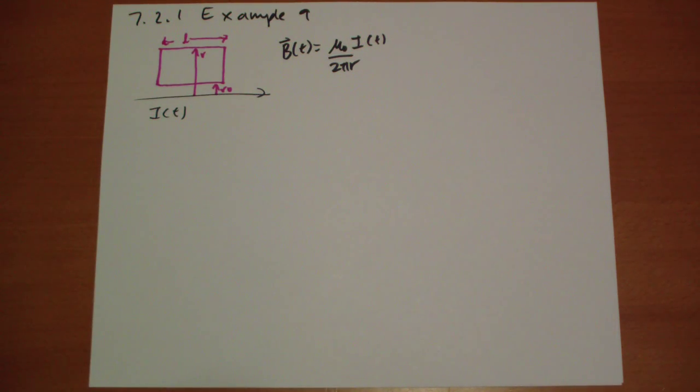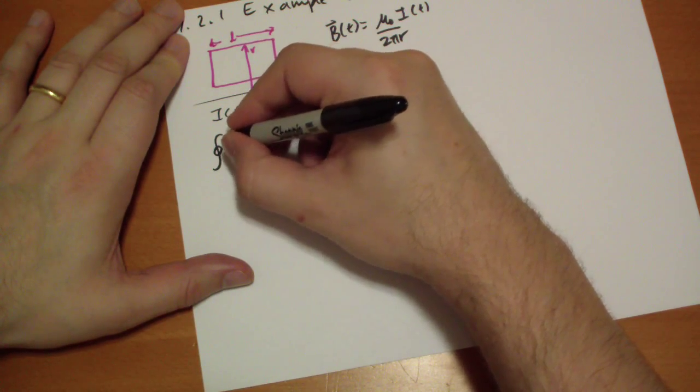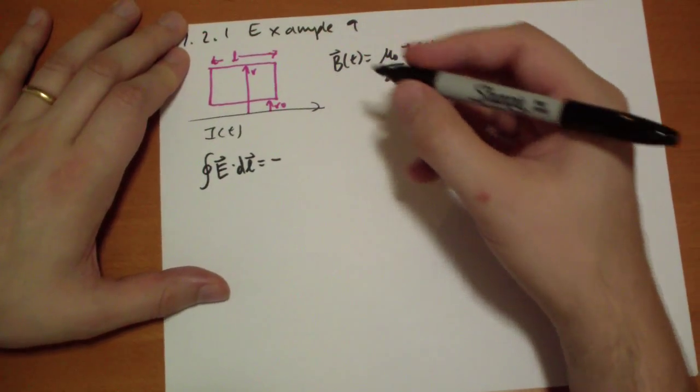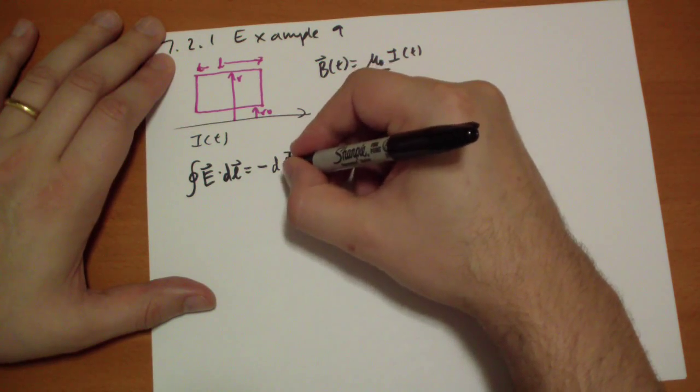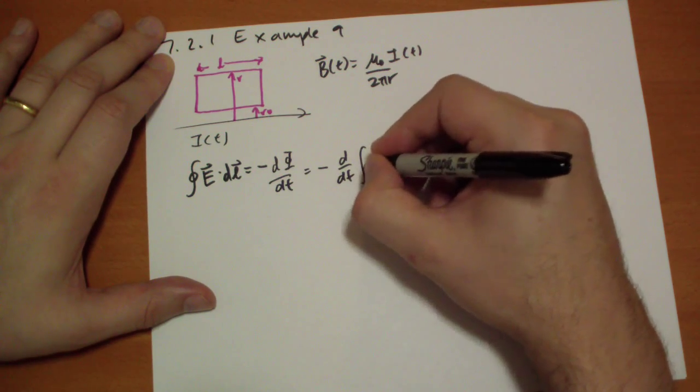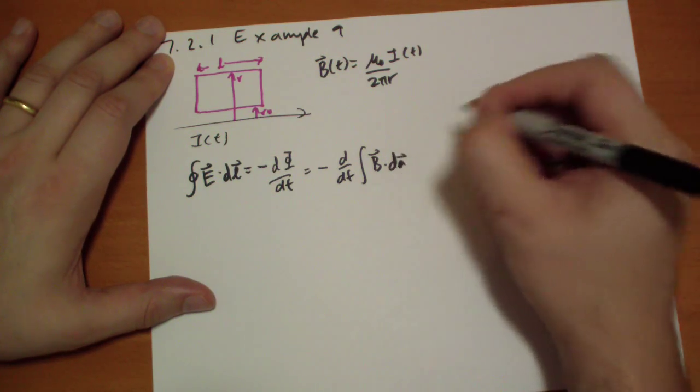We're dealing with an Amperian loop here. So we get that the loop of E dot dl has to equal minus the change in the flux, which is just minus the change in time of the flux.